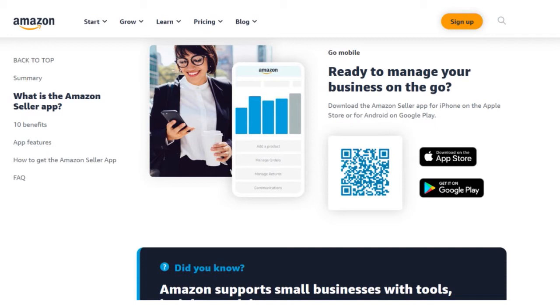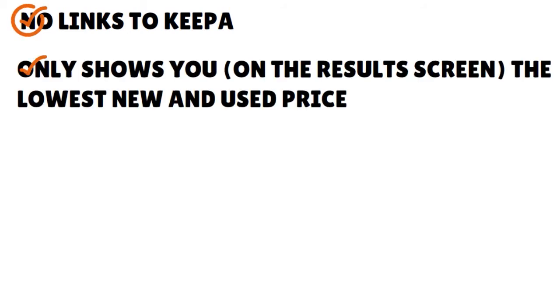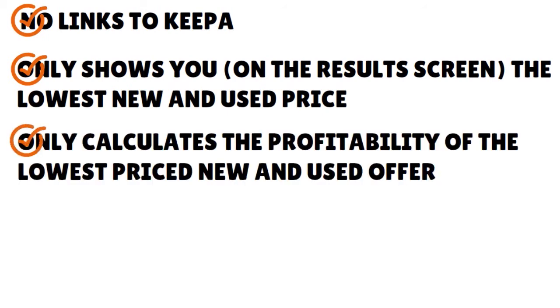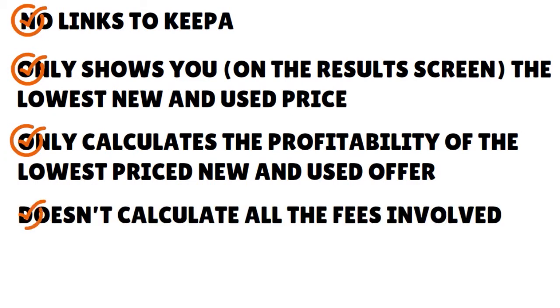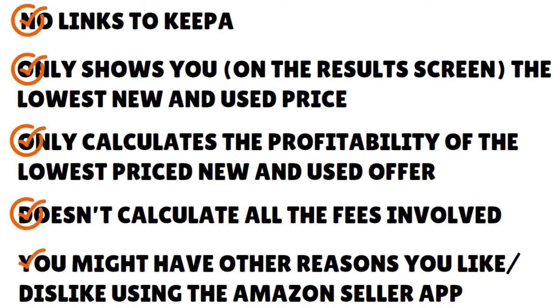There are a few things they can do to improve this tool in our view. There are no links to some third-party software tools such as Keeper. They only show you the lowest new and used price, and they only calculate the profitability of the lowest price new and used offer. They don't calculate all the fees involved. But the cool thing is — it's totally free.